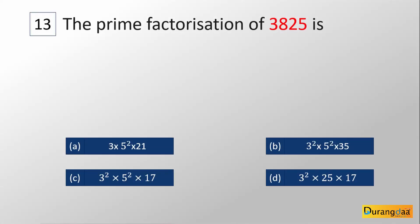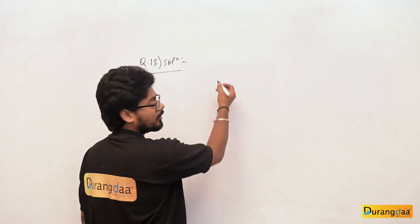Question number 13: The prime factorization of 3825 is — Option A: 3×5²×21. Option B: 3²×5²×21. Option C: 3²×5²×17. Option D: 3²×25×17.